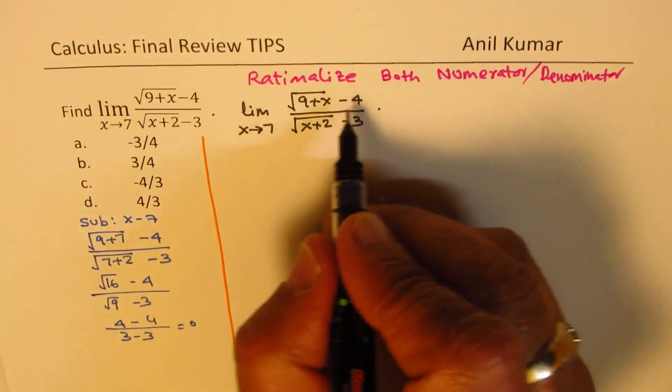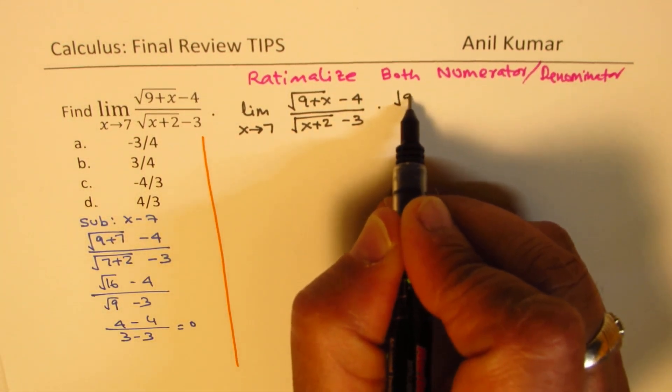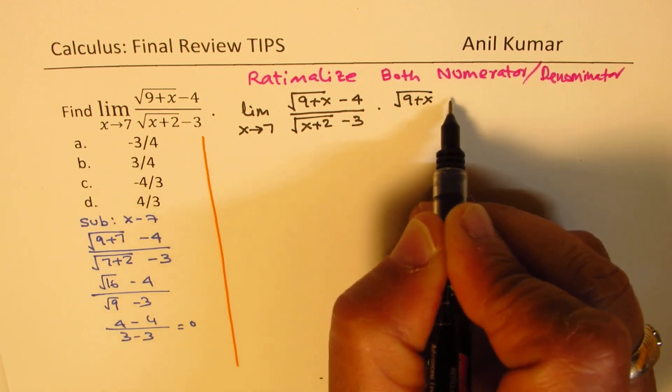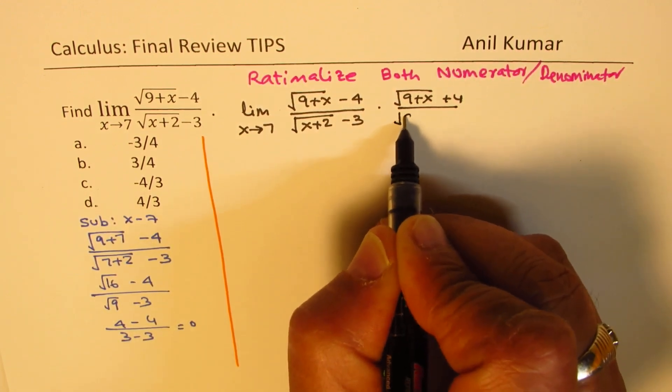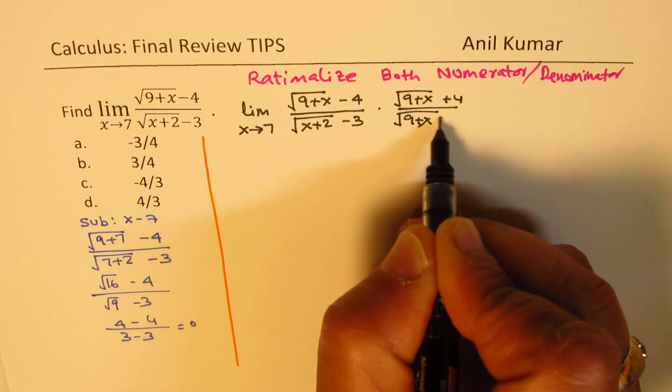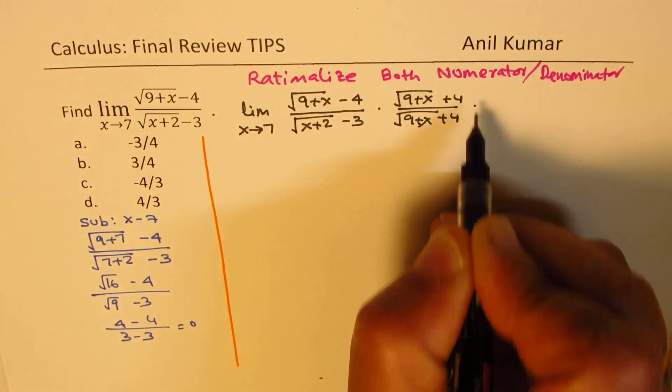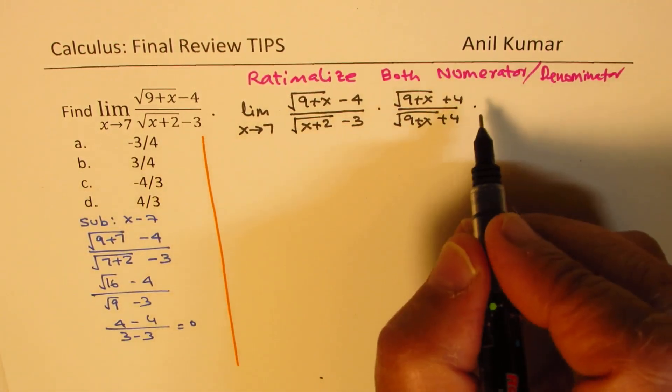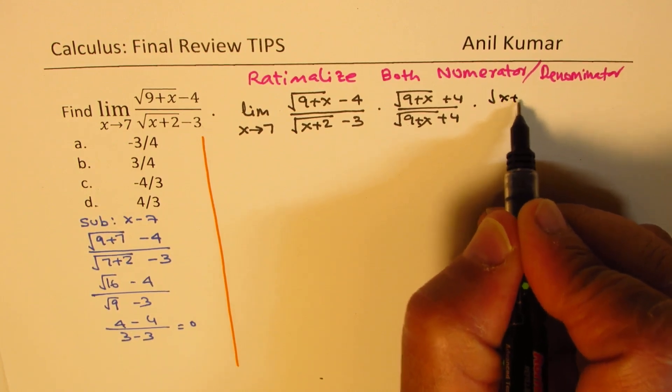Rationalizing numerator means multiply and divide by its conjugate, which is square root of 9 plus x plus 4, divided by square root of 9 plus x plus 4. Now rationalizing denominator means multiplying and dividing by its conjugate.